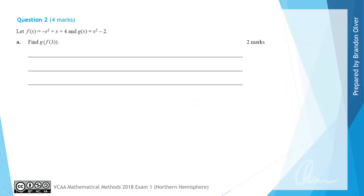For question 2 we have let f(x) equal negative x squared plus x plus 4 and g(x) equals x squared subtract 2. For part a we're asked to find g(f(3)).